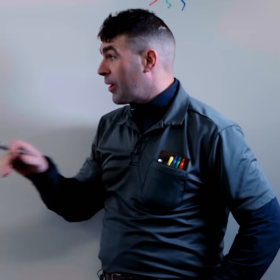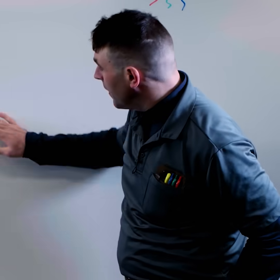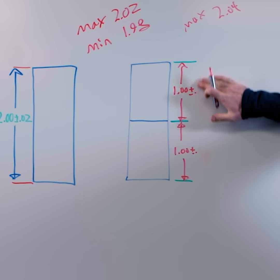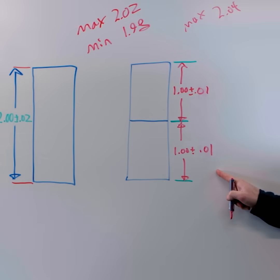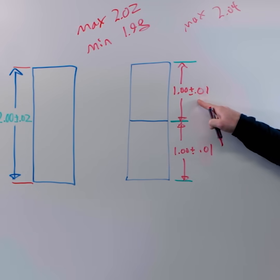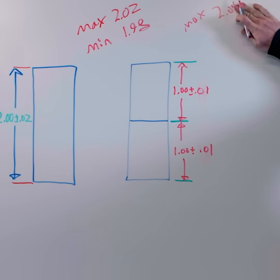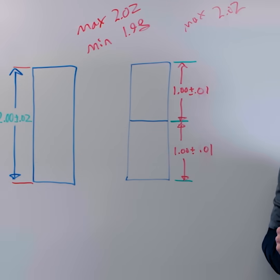So what we have to do if we go from one part to two parts is cut the tolerance on each part in half, right? So if we cut this in half, 1.01 plus 1.01 is going to give us our previous maximum.